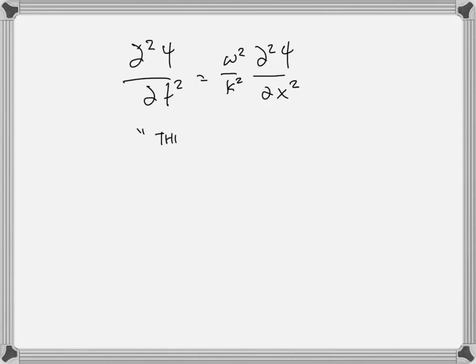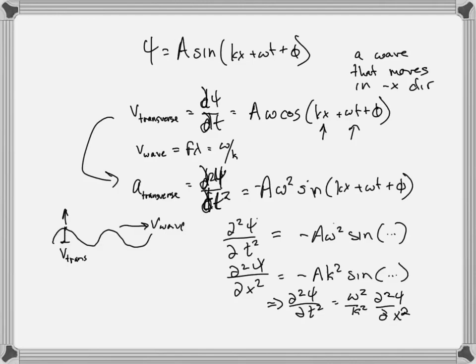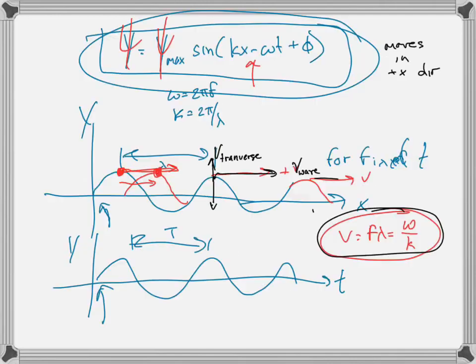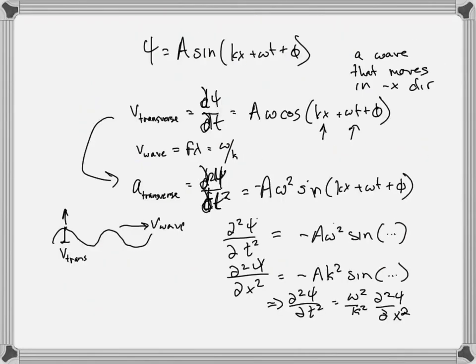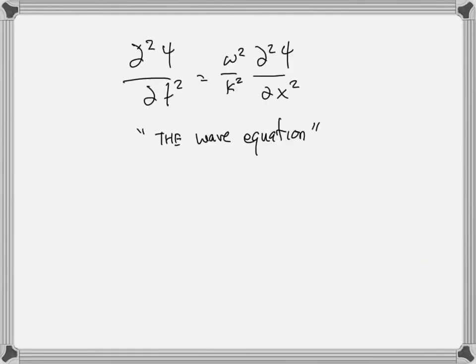This is the wave equation. If something is a wave, it must satisfy this equation, where ω²/k² equals v², the wave speed squared, because the wave velocity is ω/k. So d²ψ/dt² equals v² times d²ψ/dx². If something satisfies this equation, it is a wave with speed v. We'll come back to this and do examples later.